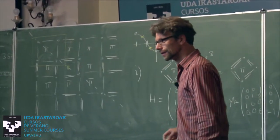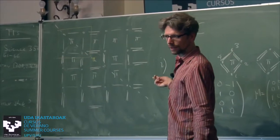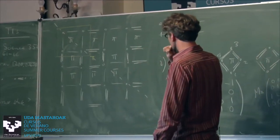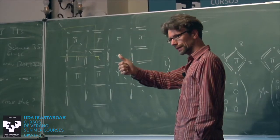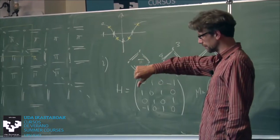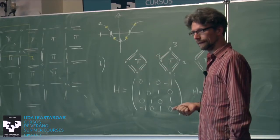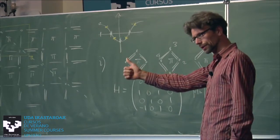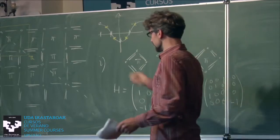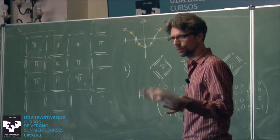This system is time-reversal symmetric. The mirror symmetry is not supposed to change the flux up to this gauge transformation. When you put a flux that's not π, the mirror flips it to minus the flux value. The π-flux has the convenient property that π and −π are the same thing modulo 2π, so the π-flux plaquette is mirror symmetric.